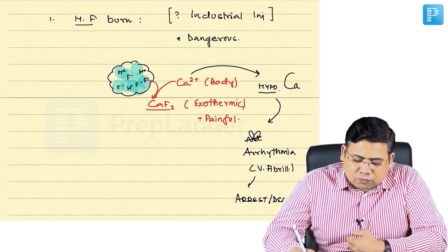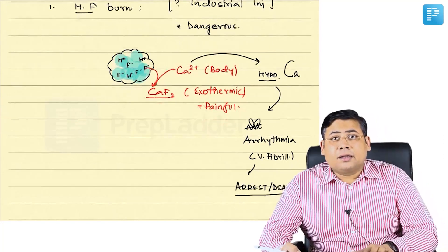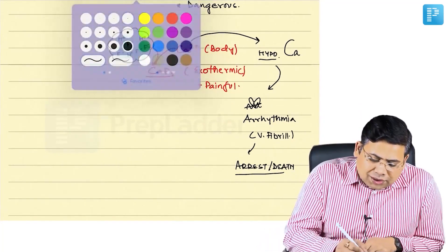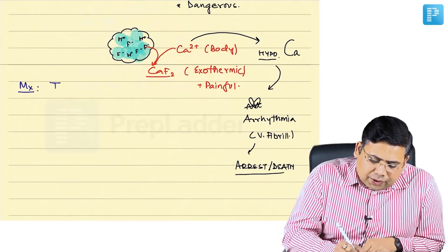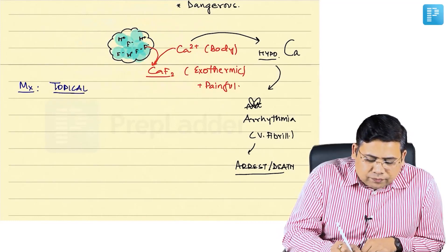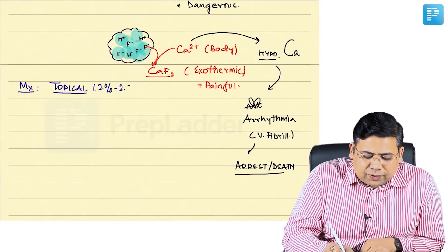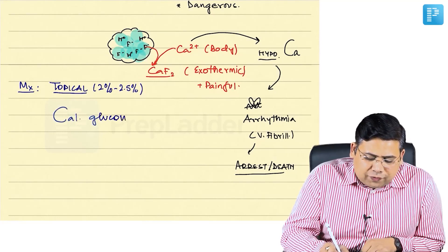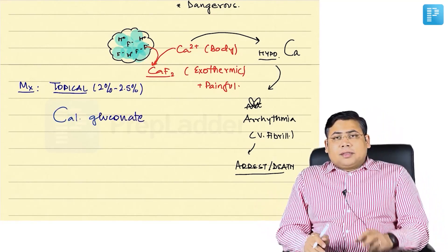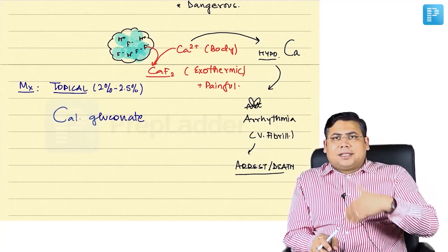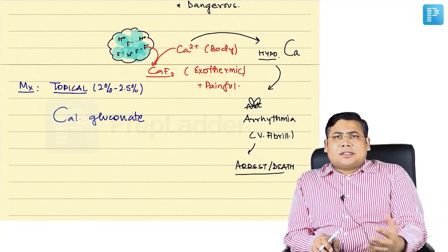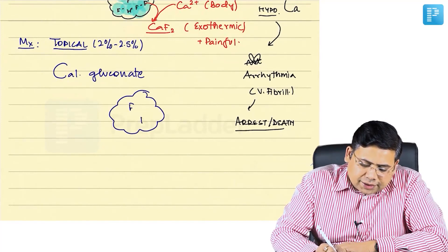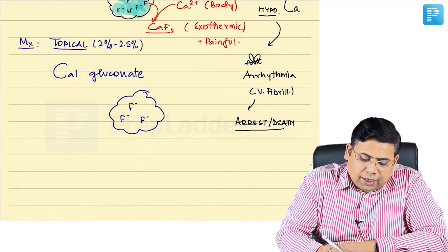Ventricular fibrillation leads to cardiac arrest and death of the patient — mortality is due to cardiac instability. The management is topical 2% to 2.5% calcium gluconate. IV calcium gluconate would only substitute the calcium being lost systemically but would not address the wound itself.